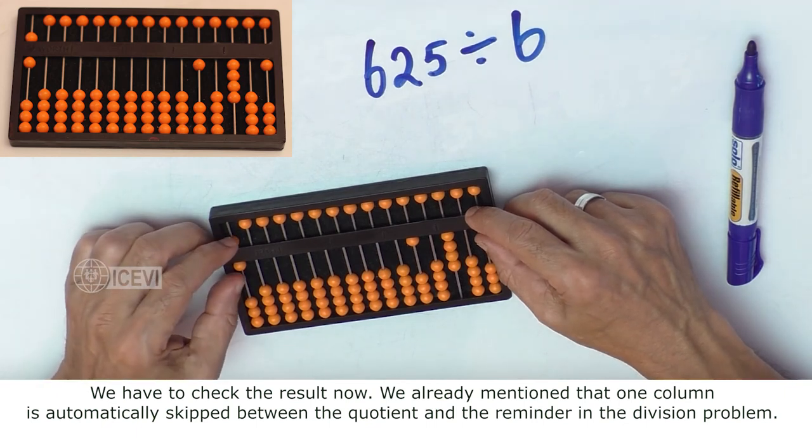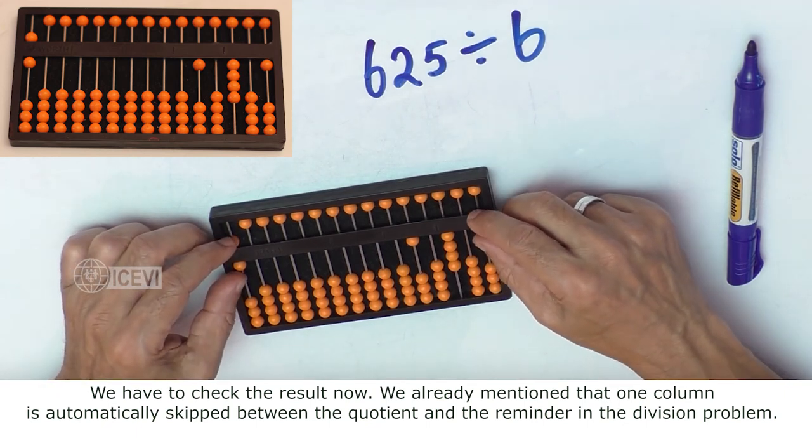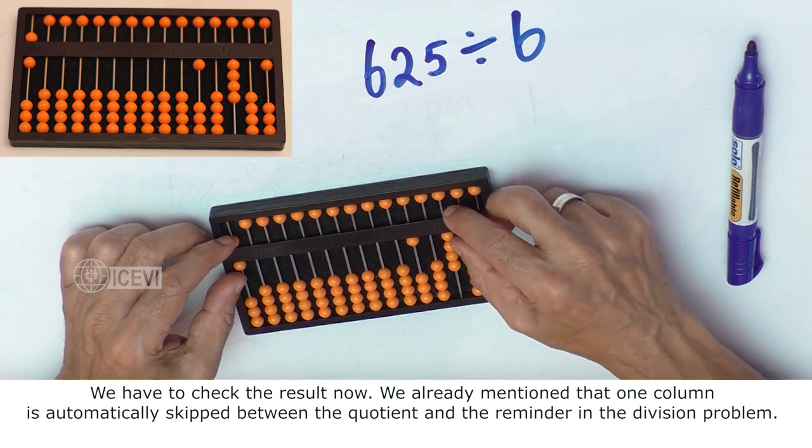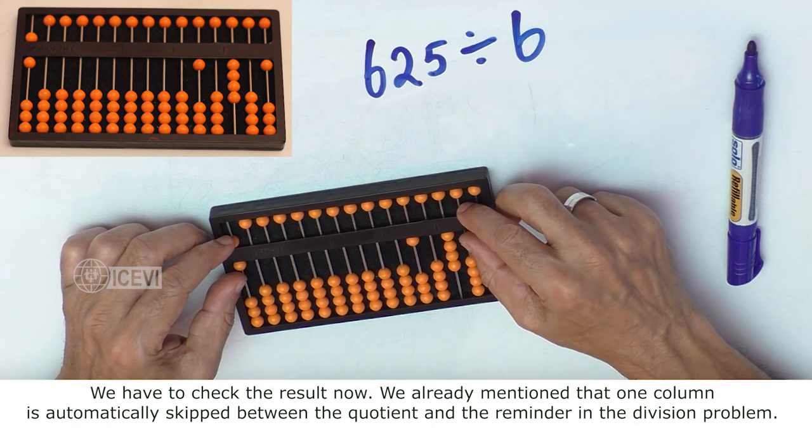We have to check the result now. We already mentioned that one column is automatically skipped between the quotient and the remainder in the division problem.